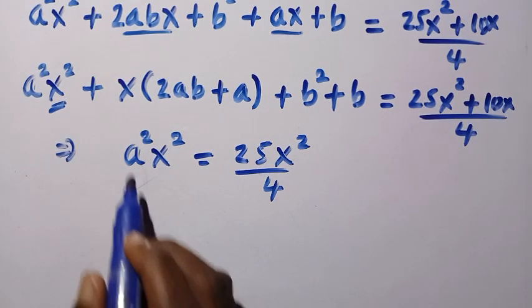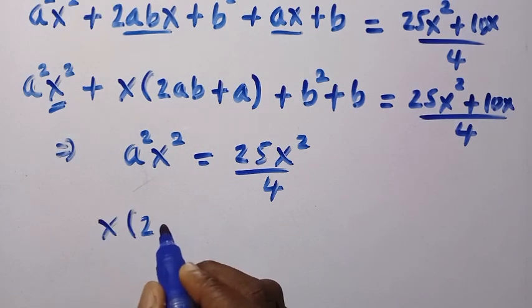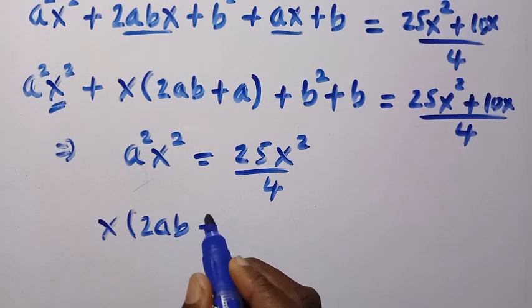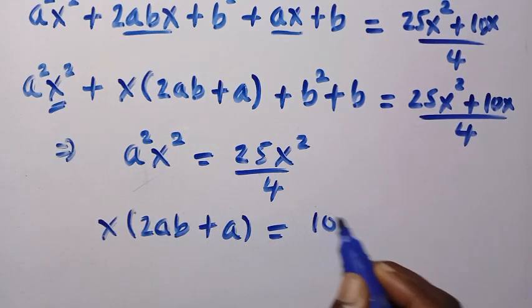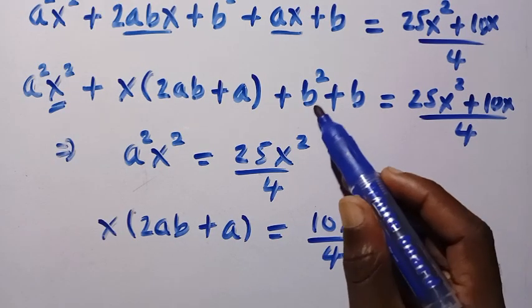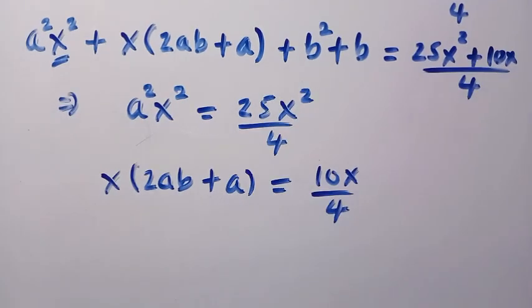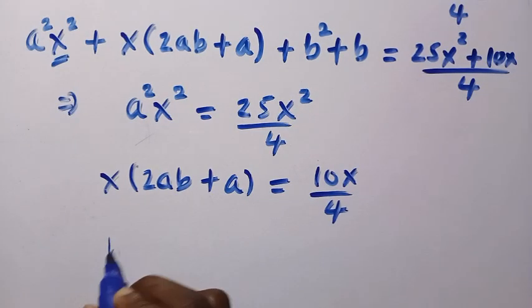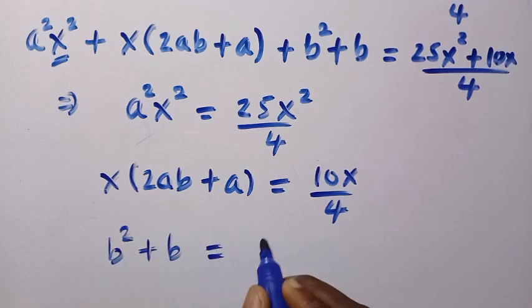And also, we combine this one as well, which is x into bracket of 2ab plus a. This will be equal to 10x divided by 4. And while the last one we are going to compare here is b squared plus b. It doesn't have anything here, but we can just say b squared plus b equals 0.